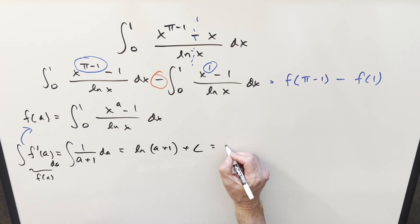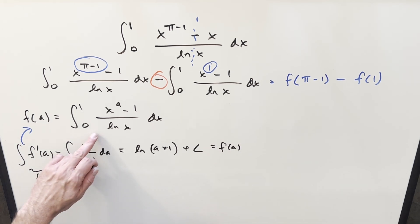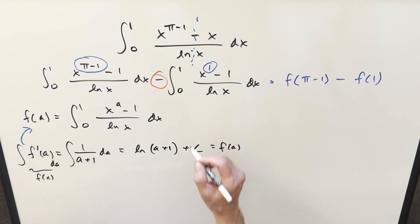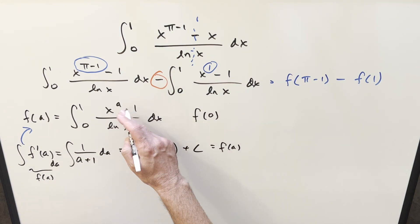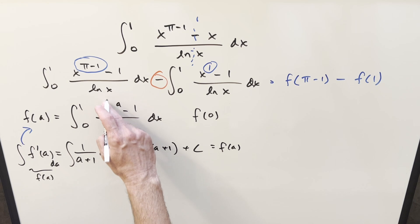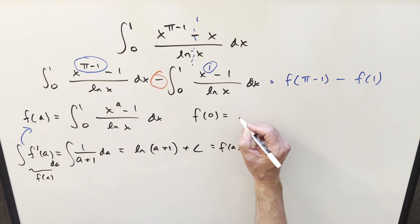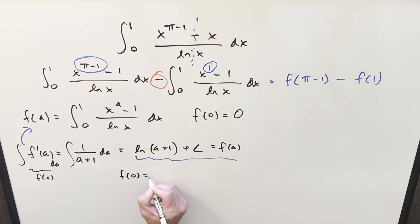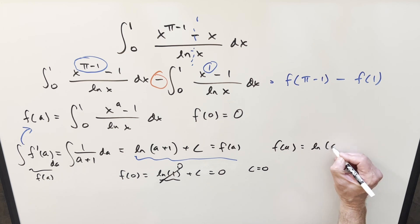And this is our f of a value. And the way we can evaluate for the plus c is coming back and looking at this. If you think about f of 0, if you plug a 0 in here, this is just going to be x to the 0, which is 1. The numerator becomes 0. The whole thing becomes 0. So our f of 0 value is 0. But anyway, going ahead with this, I need to plug in 0. So what's going to happen, we have natural log, plug a 0 in here, we have natural log 1 plus c equals 0. So this right here is 0. So that means c equals 0. And so for our f of a value, we just have natural log a plus 1.